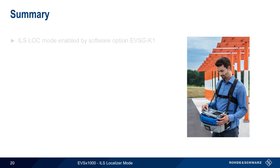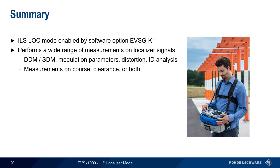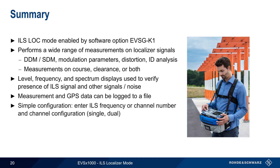In this presentation, we've covered ILS localizer analysis mode, which is enabled by software option K1. This option performs a wide range of measurements on localizer signals, including difference and sum of depth of modulation, modulation parameters on both the 90 and 150 Hz lobes, distortion measurements, and analysis of the localizer identification signal. These measurements can be performed for course, clearance, or both, individually or simultaneously. Measurement data can be logged together with GPS time and position information. Configuration is very easy — simply enter the ILS frequency in MHz or as a standard ICAO channel number, and specify the channel configuration.